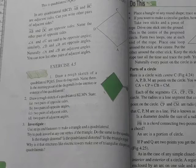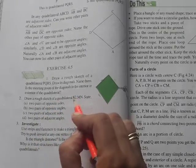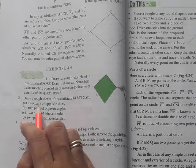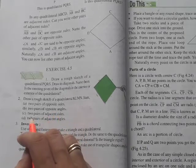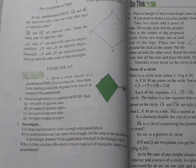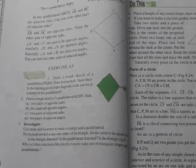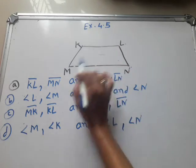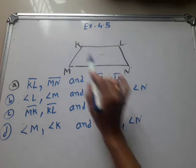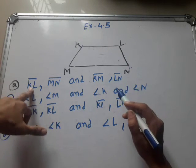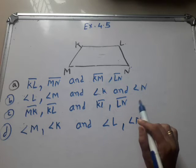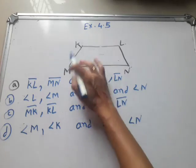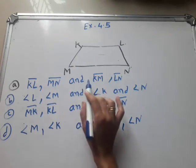Then question number 2: draw a rough sketch of quadrilateral KLMN and state two pairs of opposite sides, two pairs of opposite angles, two pairs of adjacent sides, and two pairs of adjacent angles. So we draw the rough sketch of quadrilateral KLMN — this is a four-sided polygon. We write the name KLMN. Opposite sides: KL and MN are two opposite sides. Then KN and LM — these are also two opposite sides.